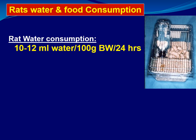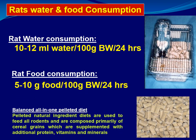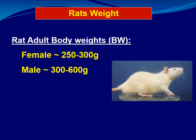Rat water consumption is about 10 to 12 ml of water per 100 grams body weight in 24 hours. So a rat weighing 200 grams would need approximately 20 to 25 ml of water per day. Adult male rat body weight is about 250 to 300 grams, while it may be larger, from 300 up to 600 grams.